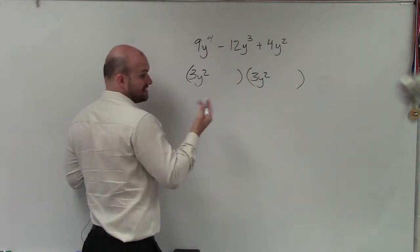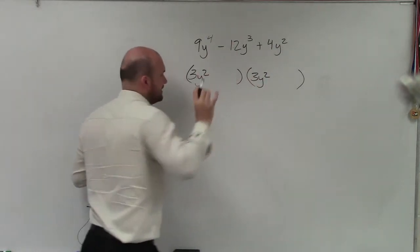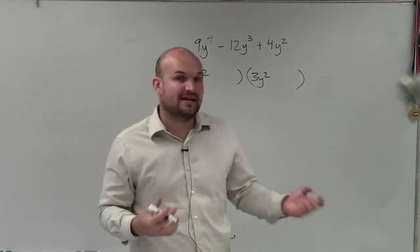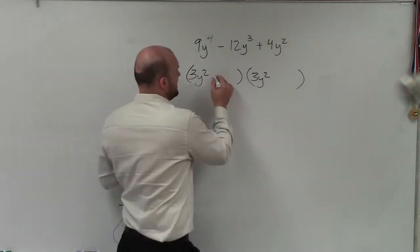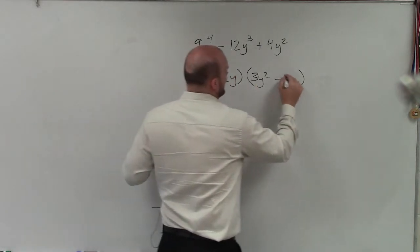To get 4y squared as a perfect square, it would have to be, now, it could be positive 2y or negative 2y. But since my middle terms are going to give me negative 12, I'm going to have to use negative 2y and negative 2y.